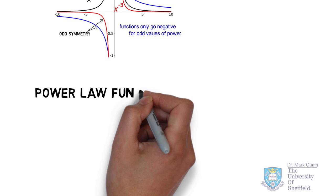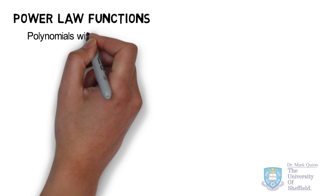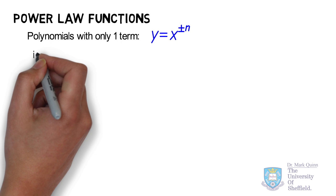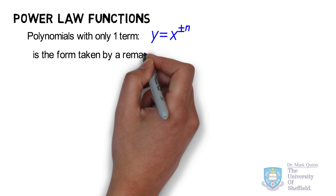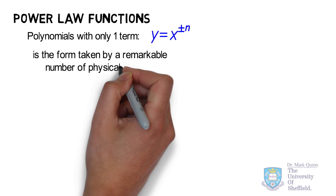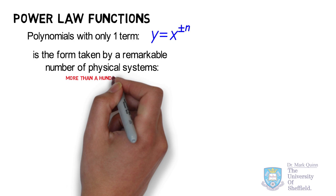Power law functions are essentially single-term polynomials, or monomials. We bring attention to this family of functions since we tend to see power laws throughout science. In physics, for example, we have the inverse power laws of forces, and there are a variety of other phenomena in biology and social sciences that can be modeled effectively using power laws. Indeed, the presence of a power law can hint at some underlying random process.